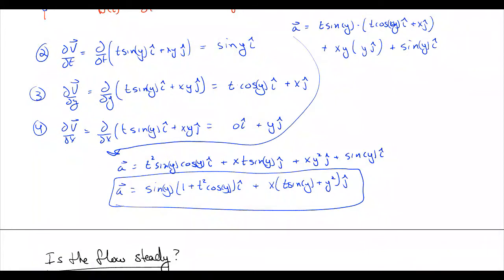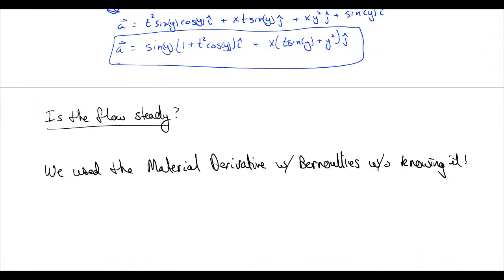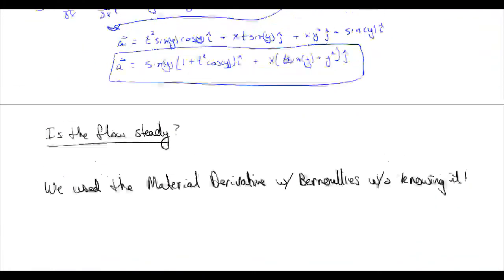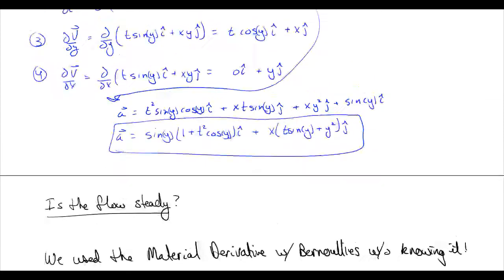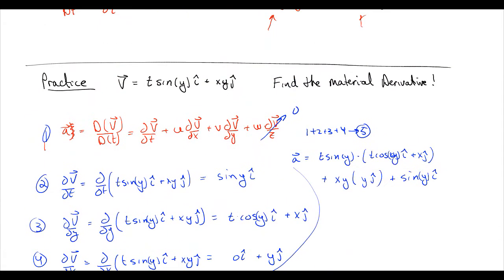We can also ask ourselves: is the flow steady? Going back to our velocity equation, the answer is a resounding no — we have a dependence on t right there in the velocity field.